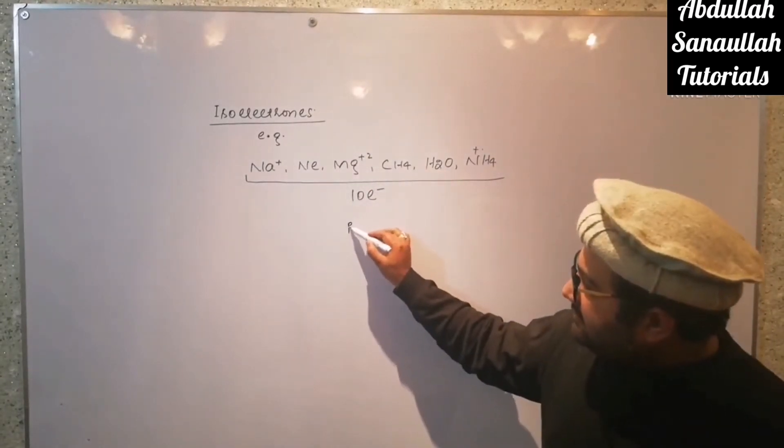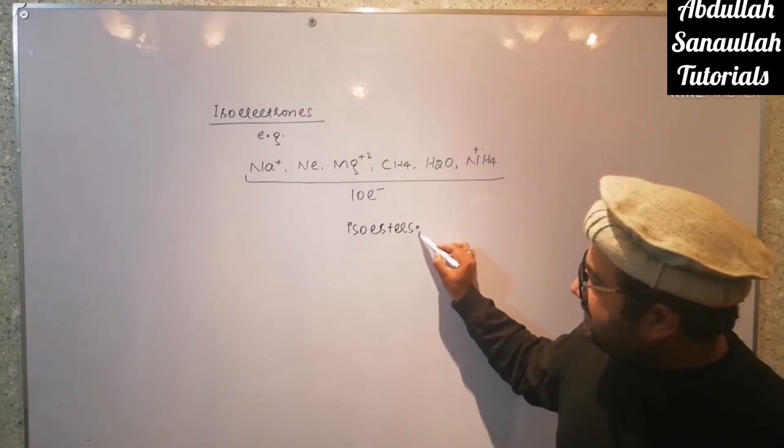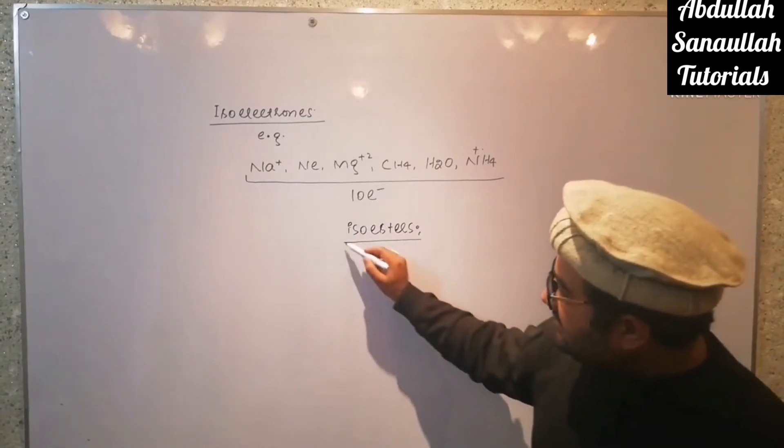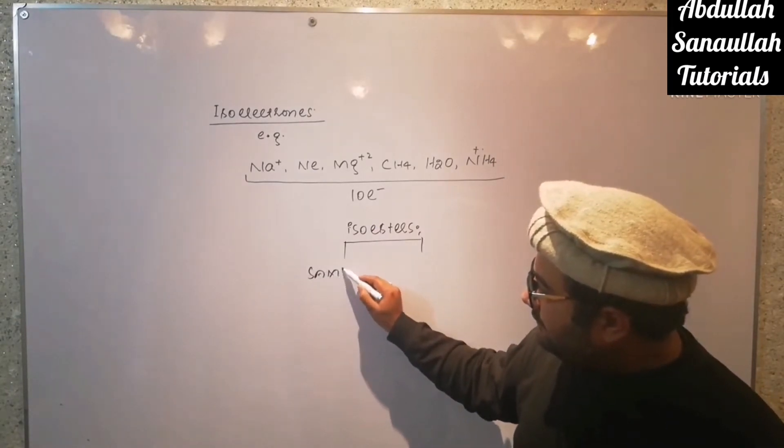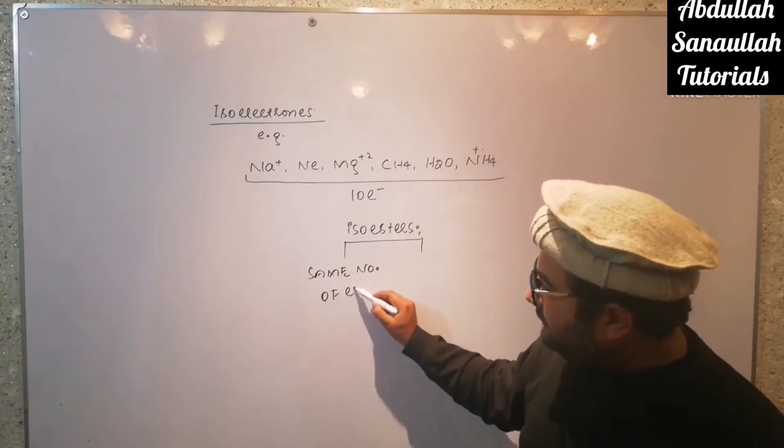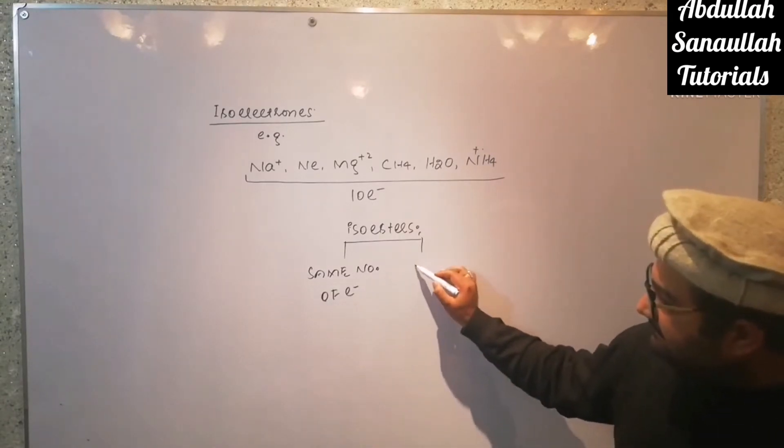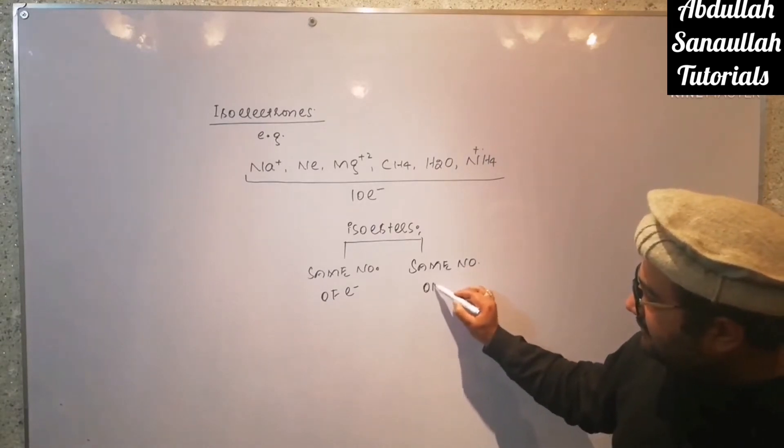That are isoesters. Now, isoesters are those species that have the same number of electrons and also the same number of atoms.